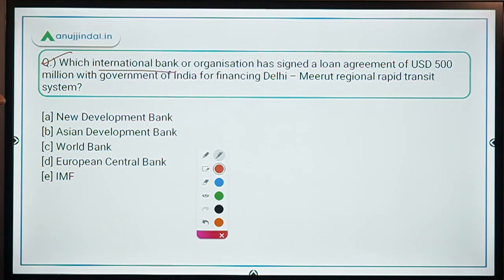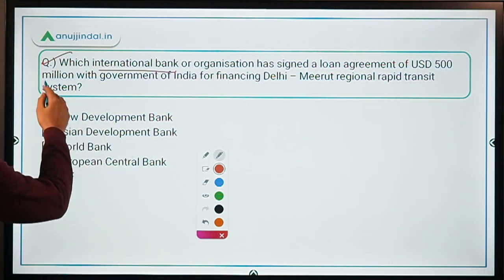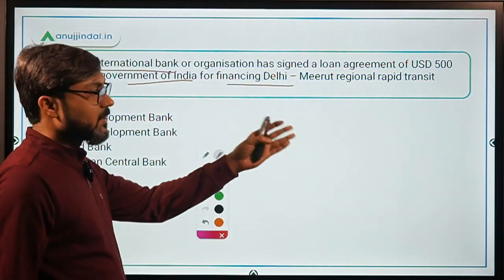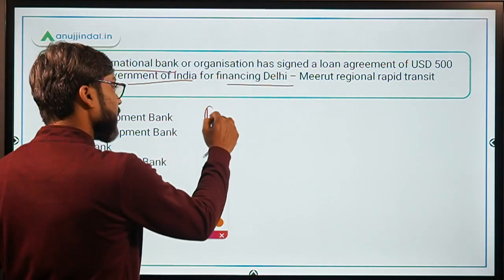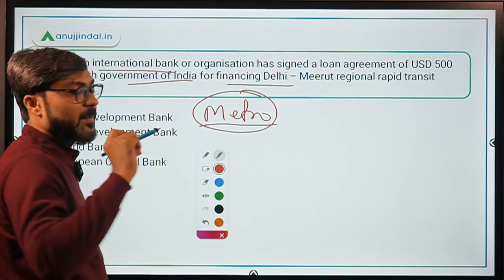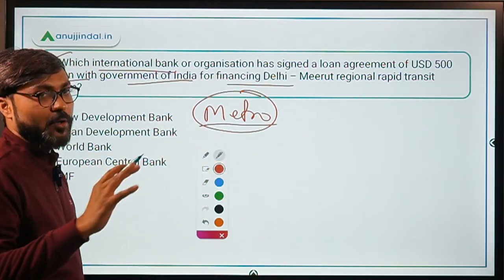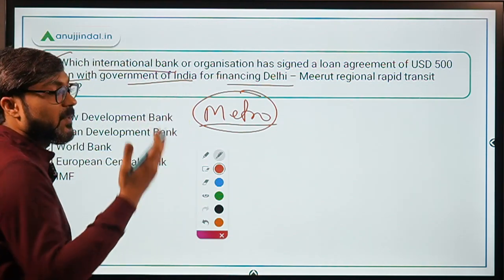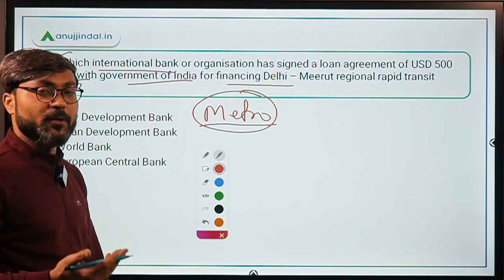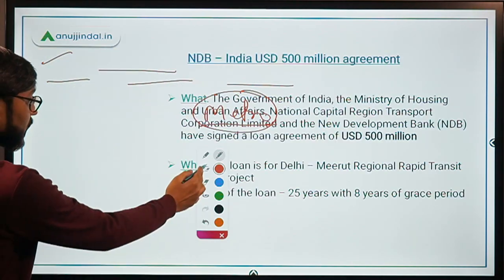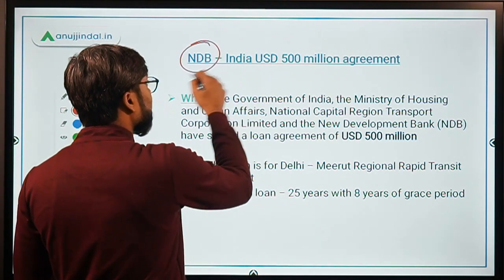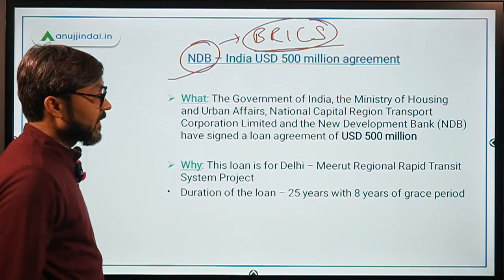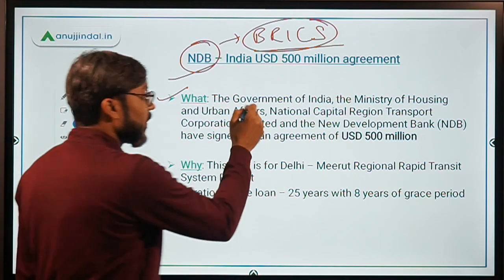Question number 4: Which international bank or organization has signed a loan agreement of US $500 million with the Government of India for financing the Delhi-Meerut Regional Rapid Transit System? Note that this is not a metro — it is a Regional Rapid Transit System. The answer is the New Development Bank, also known as the BRICS Bank.